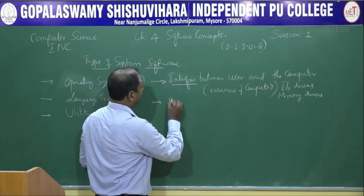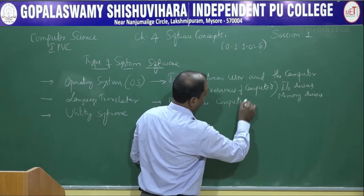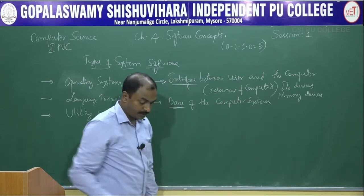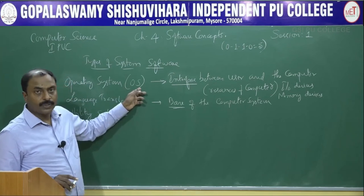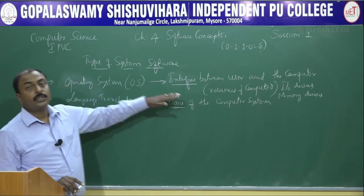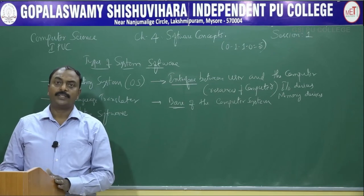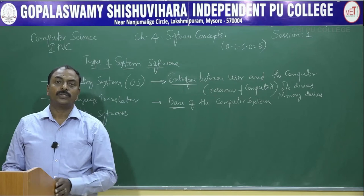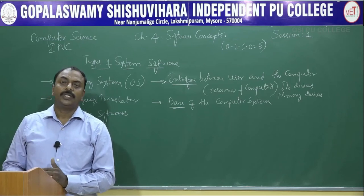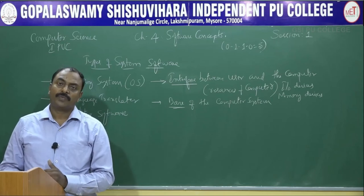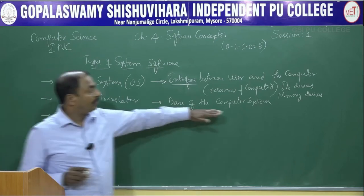The operating system is the base of the computer system. When you boot the computer, the operating system is the first software loaded. After the operating system loads, the user can work with the computer. For example, if you want to work with MS Word, once the operating system is loaded, you go to the start menu, then programs, and select MS Word. That is why it is called the base of the computer system.